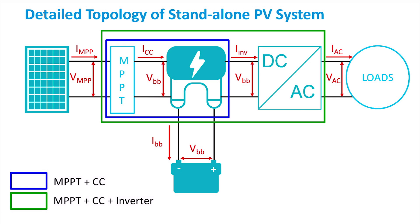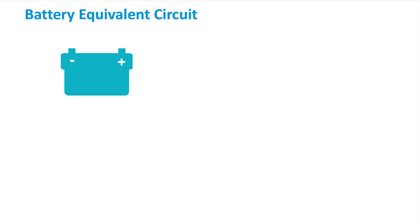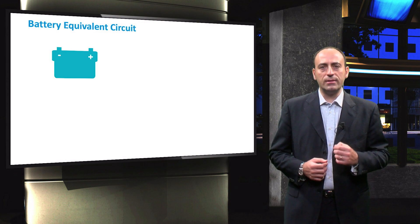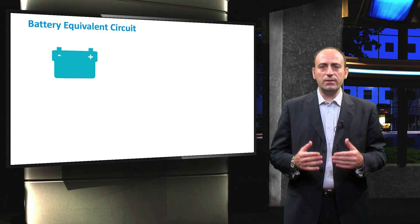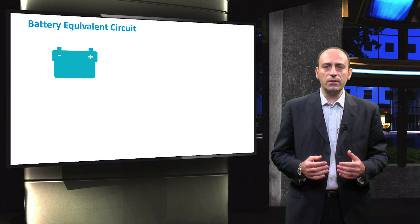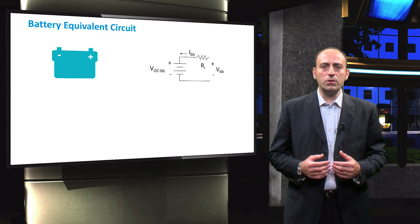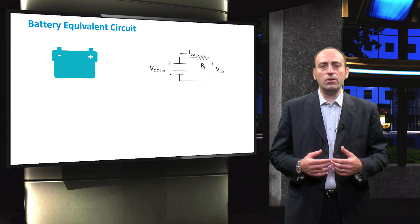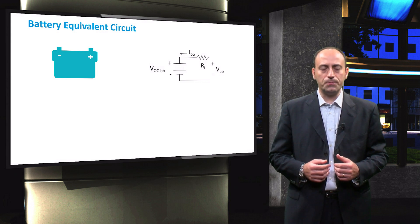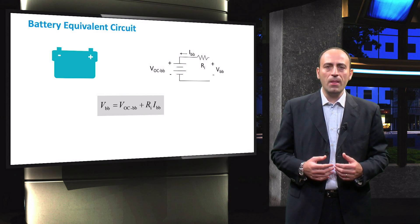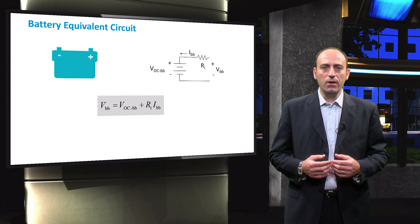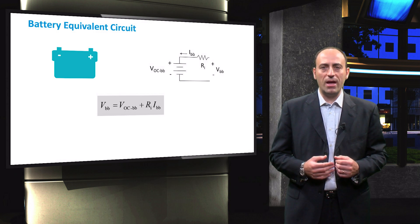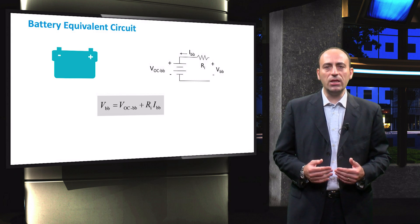Whatever is the type of device used, the energy flow inside them will be like the topology depicted here. Let us now briefly recap the equivalent electrical circuit and the IV curve of a typical battery. A battery is represented by a voltage source connected along with a series resistor. The voltage source denotes the open-circuit voltage of the battery, while the series resistor represents the internal resistance RI faced by the charge carriers during the charging and discharging process. From this, the voltage of the battery, VBB, is represented as VOC_BB plus the product of IBB and RI. Here, IBB is the current flowing into or leaving the battery, which is positive when the battery is being charged and negative when it is being discharged.